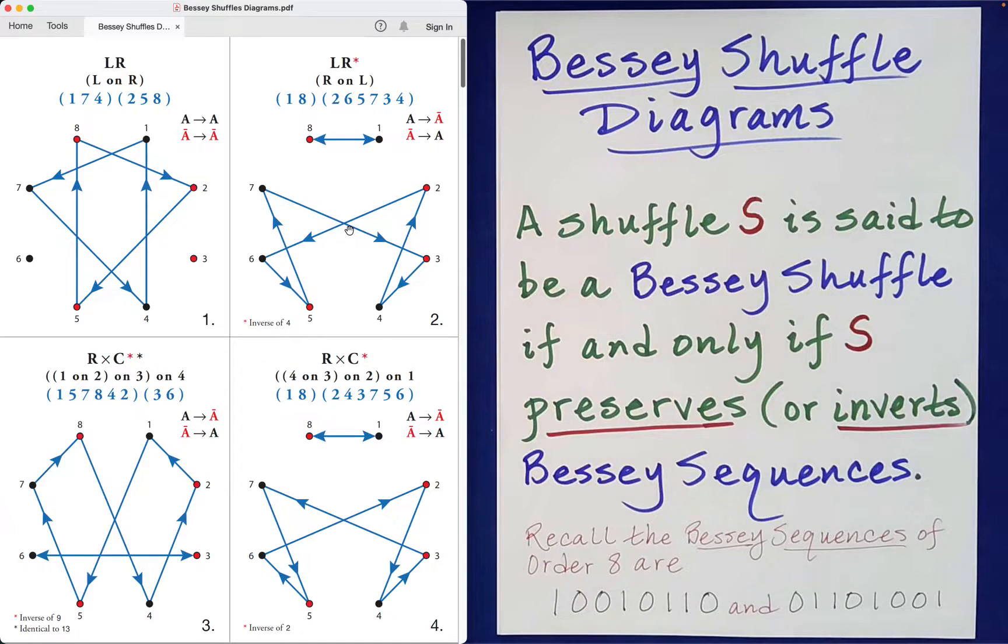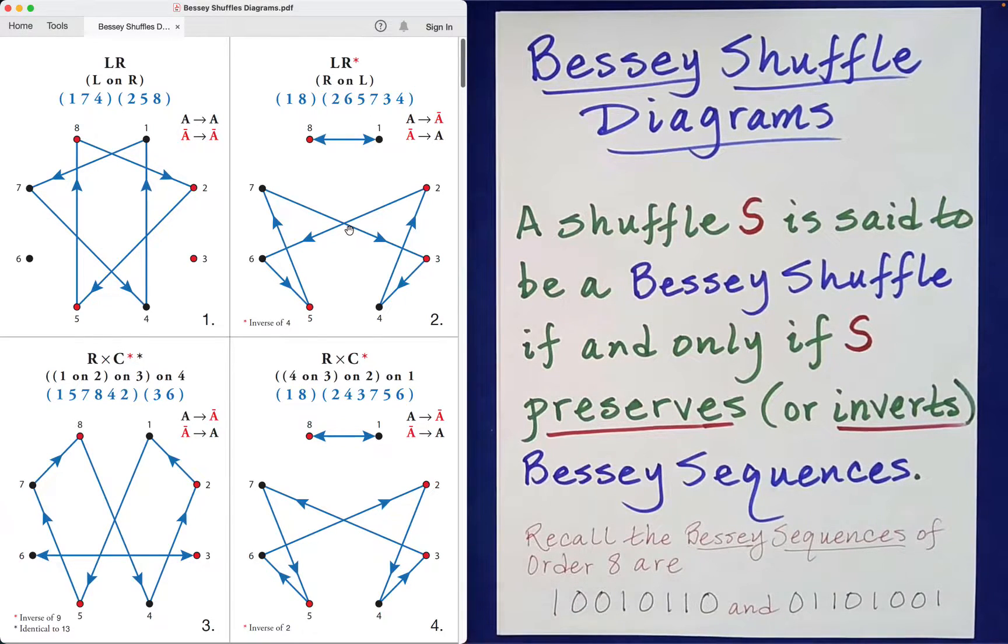So it ends up that many many shuffles that people use are actually examples of Bessie shuffles. And they're examples of Bessie shuffles because they preserve Bessie sequences. That's what qualifies being a Bessie shuffle, it has to preserve or invert Bessie sequences.